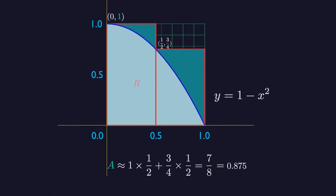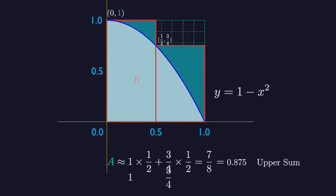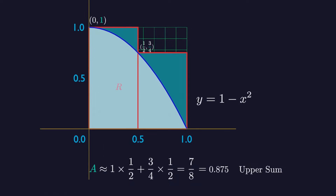This estimate is larger than the true area A, since the two rectangles contain R. We say that 0.875 is an upper sum, because it is obtained by taking the height of the rectangle corresponding to the maximum, or uppermost, value of the function over each sub-interval lying in the base of each rectangle.